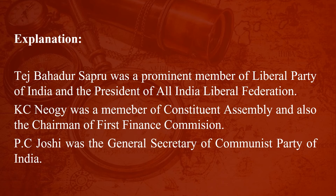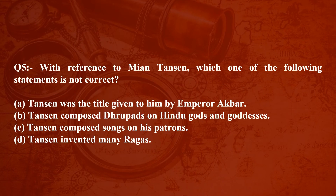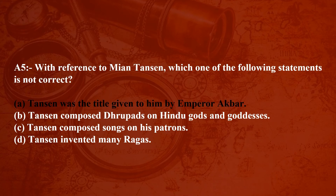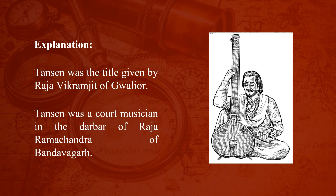Question number five: With reference to Mian Tansen, which one of the following statements is not correct? Option A: Tansen was the title given to him by Emperor Akbar. Option B: Tansen composed dhrupads on Hindu gods and goddesses. Option C: Tansen composed songs on his patrons. Option D: Tansen invented many ragas. The answer is Option A — the statement that Tansen was the title given to him by Emperor Akbar is incorrect. The title Tansen was actually given by Raja Vikramajit of Gwalior. Tansen was a court musician in the darbar of Raja Ramchandra of Bandhavgarh.